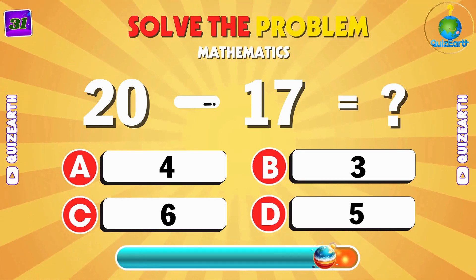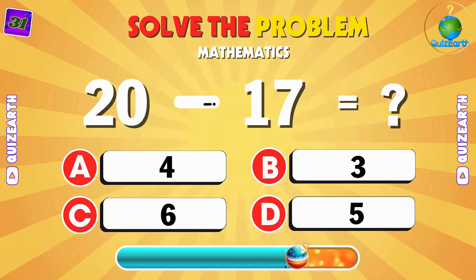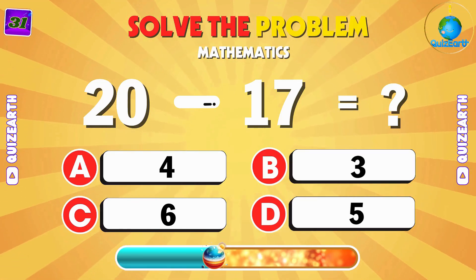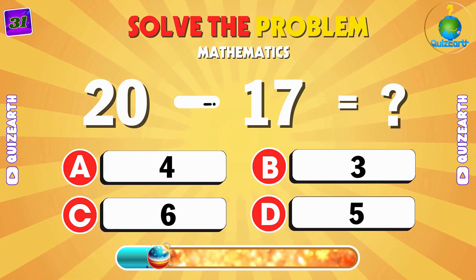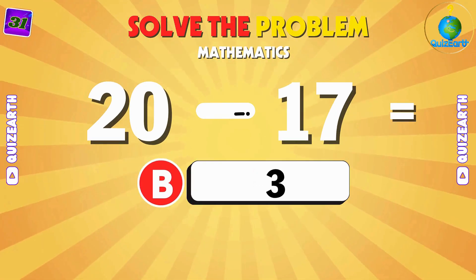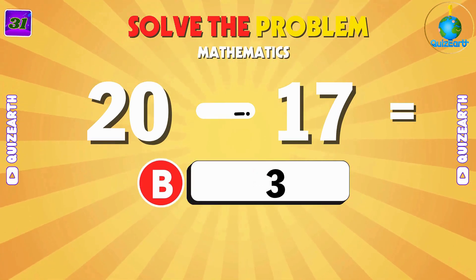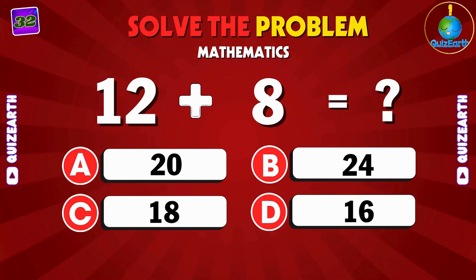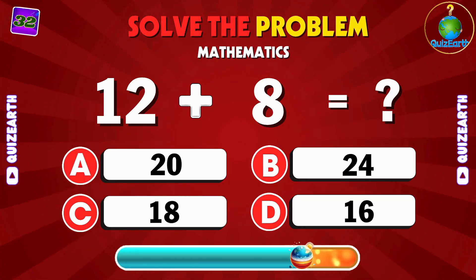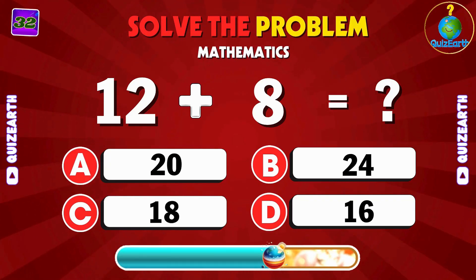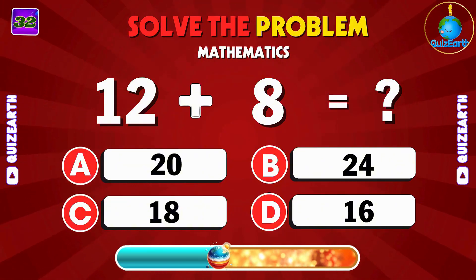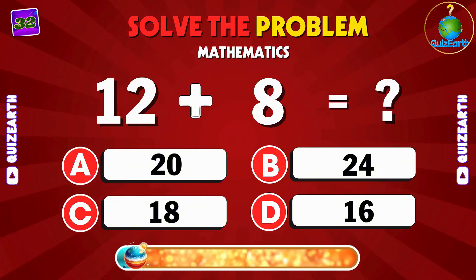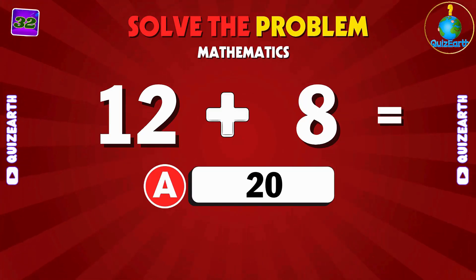Subtract 17 from 20 — can you do it quickly? B: 3. Add 12 and 8 — what do you get? A: 20.